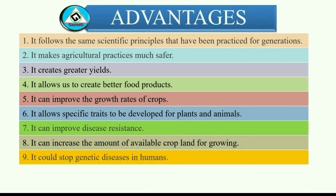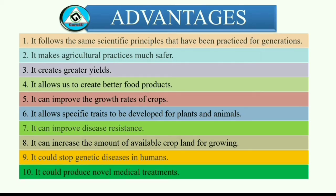It could stop genetic diseases in humans. Genetic engineering could open a new field of medicine for humanity. We already have genetic testing in place to test for certain cancers. We could use DNA manipulation to help treat or cure people who are born with genetic disorders. It could produce novel medical treatments. Genetic engineering is already used in medicine to create a variety of treatments. We have vaccines, insulin, and even hormone treatments available because of genetic engineering. As this science progresses, we can create more treatments that allow us to be proactive against pathogens that can have life-threatening characteristics.